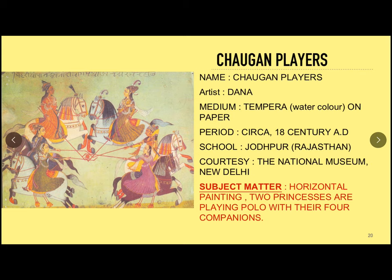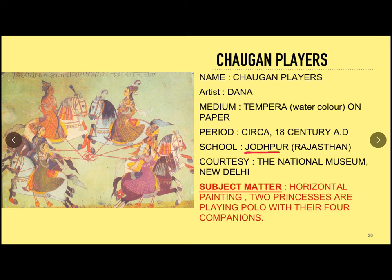Let's start with an important painting of Jodhpur School. It is Chogun Player, artist Dana, medium tempera and watercolor on paper, period circa 18th century AD. School is Jodhpur, the sub-school of Rajasthan. Courtesy, this painting is in the National Museum, New Delhi.